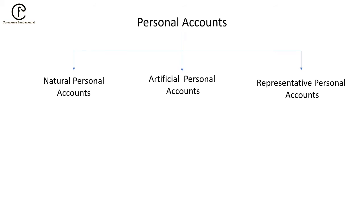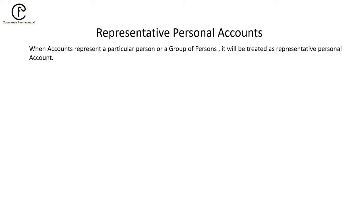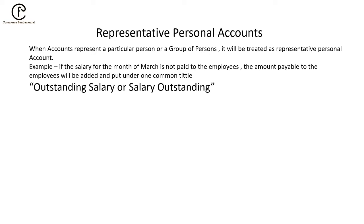Representative Personal Accounts are accounts that represent a particular person or a group of persons. For example, if the salary for the month of March is not paid to the employees — employees are a group of persons — the amount will be put under a common head called 'Outstanding Salary.' Outstanding Salary represents the group of all employees' unpaid salary, making it a representative personal account.